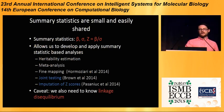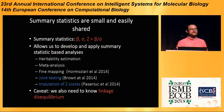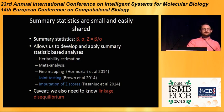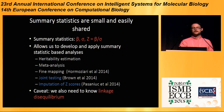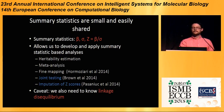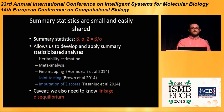When I say summary statistics, I mean beta — the coefficient of regression — sigma, the standard error of that estimate, and z, the association statistic, which is beta divided by the standard error. If we have these, it allows us to develop summary statistic-based analysis. There are actually a lot of things you can do with just summary statistics, such as heritability estimation, meta-analysis between multiple studies, fine mapping, which we heard about yesterday by Farhad, and joint testing and imputation of z-scores. Today I'm going to be focusing on these last two: joint testing and imputation of z-scores.